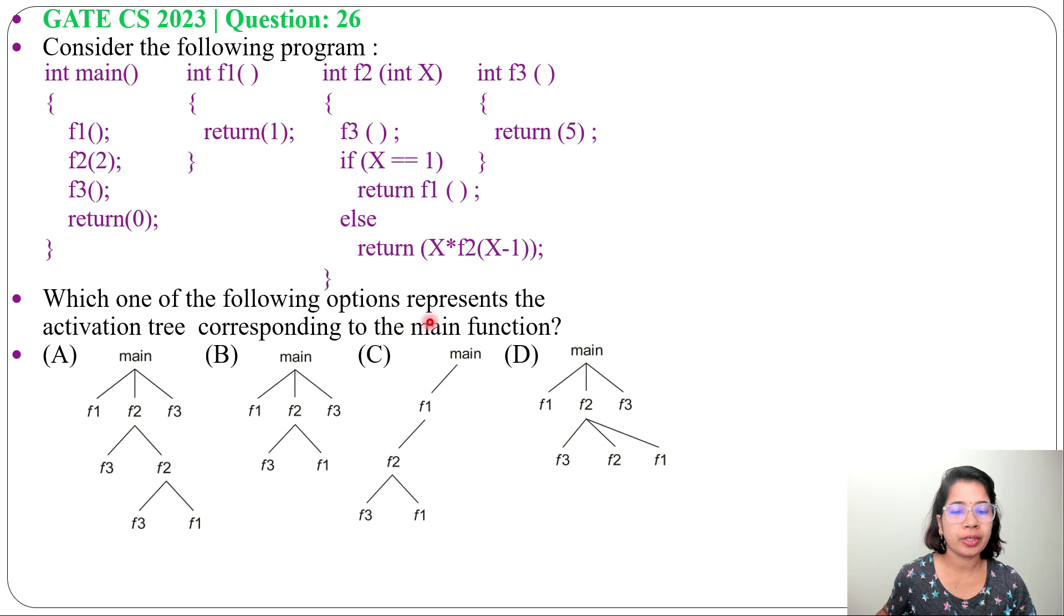Which one of the following options represents the activation tree corresponding to the main function? And in four options, four activation trees are given. I already discussed activation tree. First go through the activation tree lecture, then come to this lecture so that you can understand.